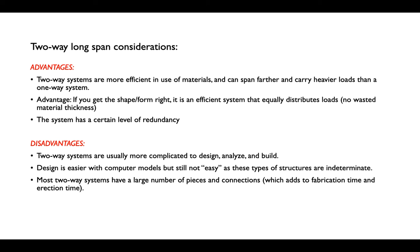The disadvantages of two-way systems are mostly in the design and construction process. They're much more complicated — harder to understand, harder to calculate, harder to analyze. We can compute them more easily now with better digital models than 15 or 20 years ago, but they remain indeterminate — we don't always know exactly how loads are shared across multiple directions. Engineers often use statistical methods rather than precise mathematical methods. And double curvature is a pain on site and even in fabrication: it means many very different pieces requiring tight tolerances, lots of connections, and skilled labor.